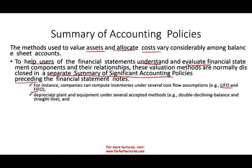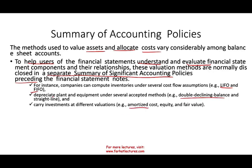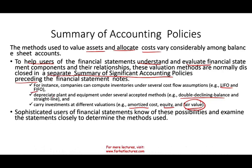For example, for inventory, are we using FIFO or LIFO — what is the cost flow assumption? For depreciation of property, plant, and equipment, are we using straight line, double declining balance, or sum of years' digits? For investments, are we using amortized cost, equity, or fair value? The reason this matters is that sophisticated users want to know: if one company uses FIFO and another uses LIFO, those are not comparable — but knowing the method allows analysts to make proper decisions and comparisons.